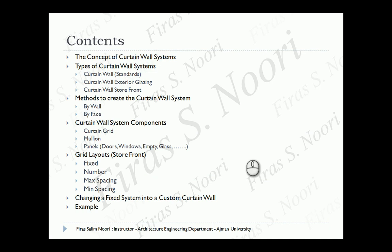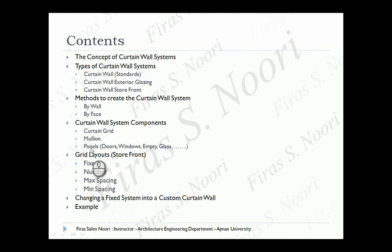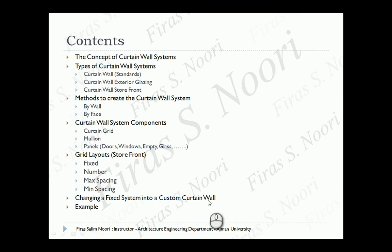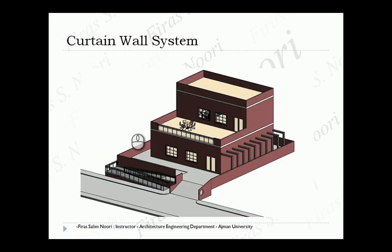We'll cover the concept of the curtain wall system, the types - standard, exterior glazing, and storefront - how to create it either by wall or by face, and the curtain wall system components: curtain grid, mullion, and panels. Then we'll look at the grid layout types: fixed distance, fixed number, maximum spacing, and minimum spacing, and how to change a fixed system into a custom curtain wall.